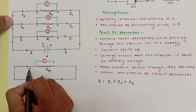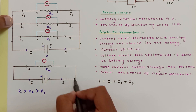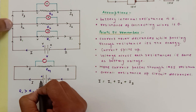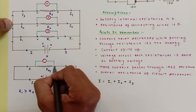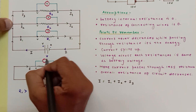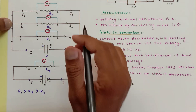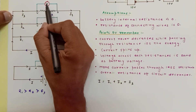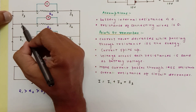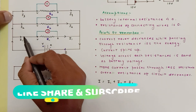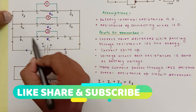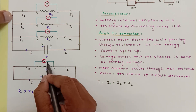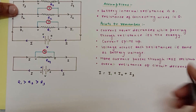This current I passes through REQ and comes back. The potential difference across REQ is also V — this side is V and the other is 0. Applying Ohm's law: V = I3·R3, V = I2·R2, V = I1·R1, and for the equivalent circuit, V = I·REQ. The product of current and resistance equals the voltage shown on the voltmeter.